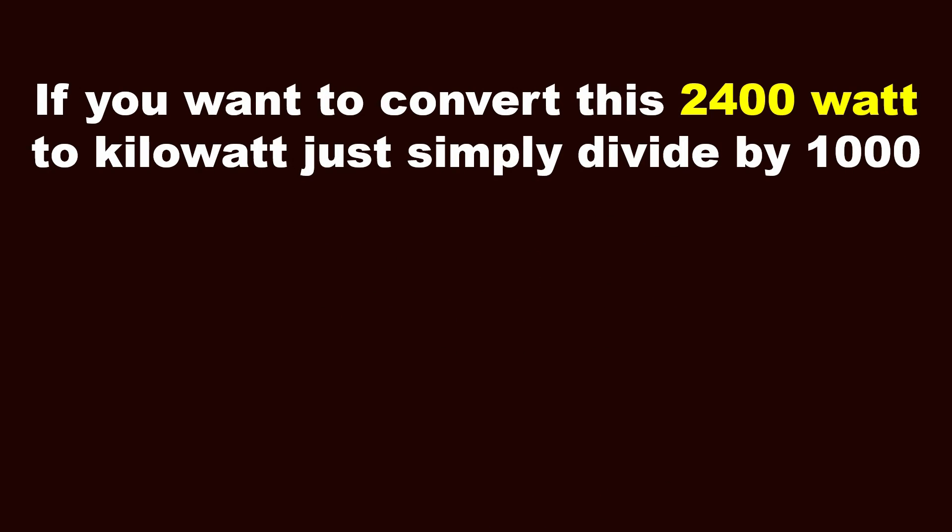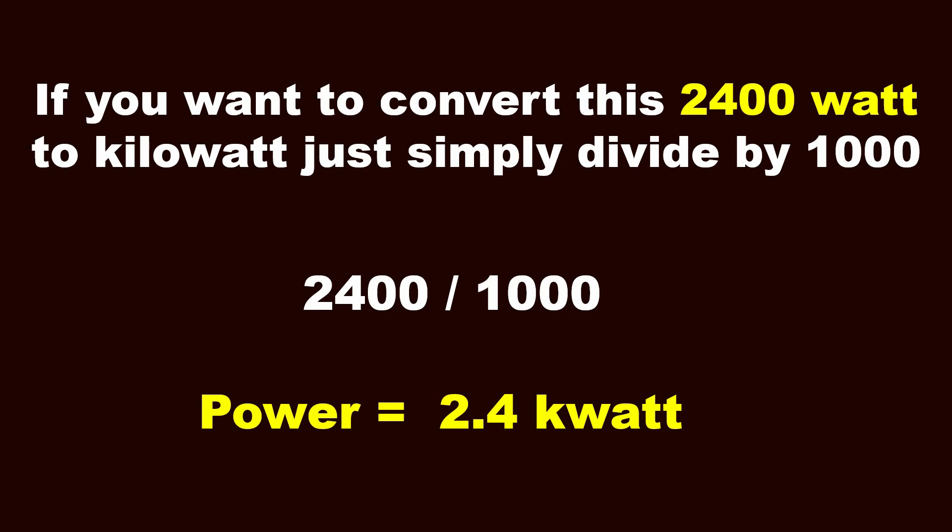If you want to convert this 2400 watts to kilowatts, just simply divide by 1000. So 2400 divided by 1000, the answer becomes 2.4 kilowatts.